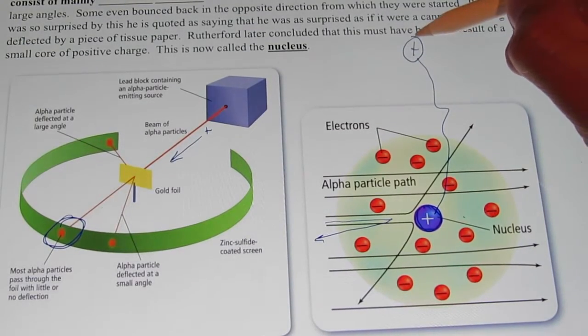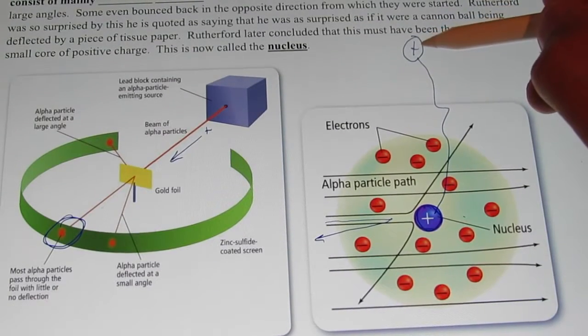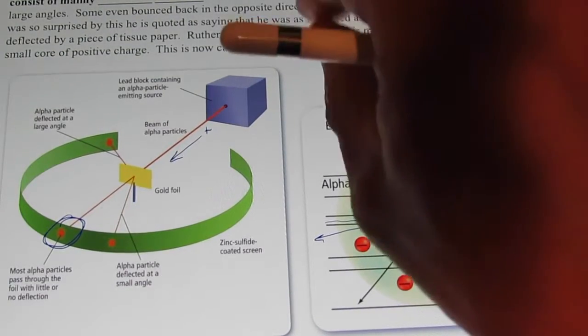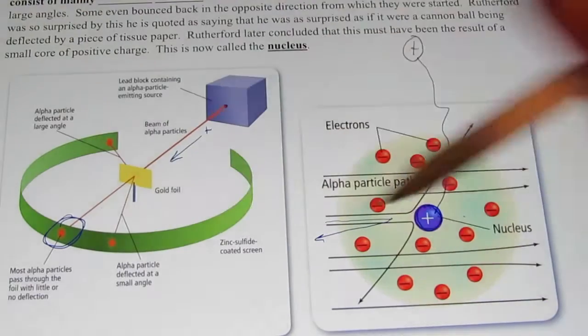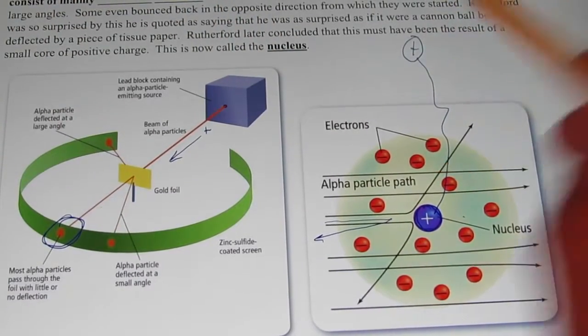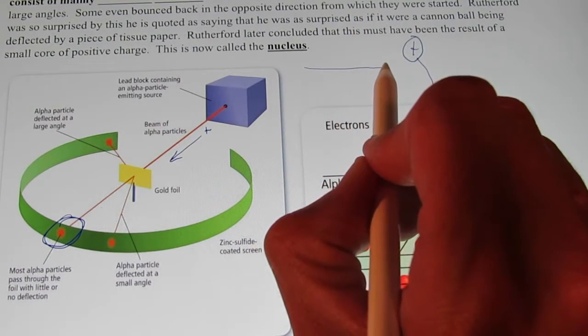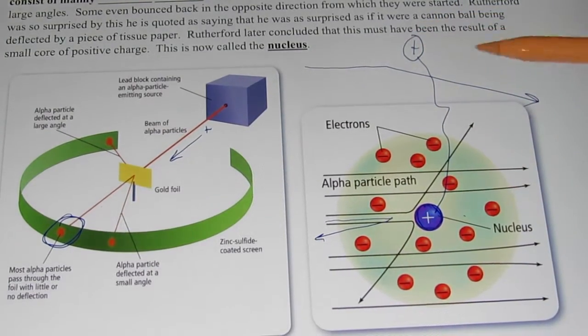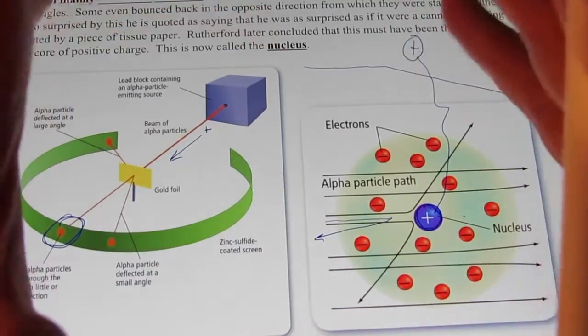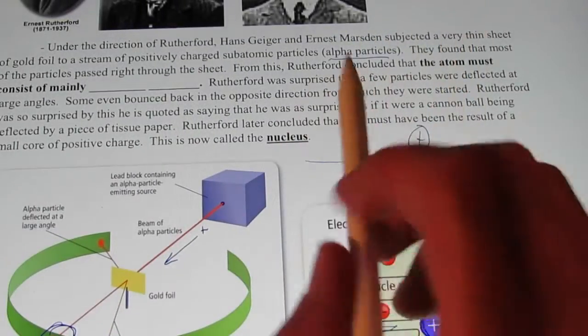To illustrate the scale: if we made the nucleus the size of a quarter and placed it on the 50-yard line of a football field, the nearest electron would be about a half mile away, orbiting about the size of a flea outside that football stadium. So when shooting alpha particles at gold foil, the chances of one even coming close to a nucleus were almost negligible — that's why almost all of them went straight through. Rutherford concluded that the atom consists mainly of empty space.